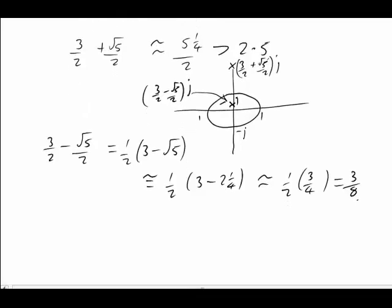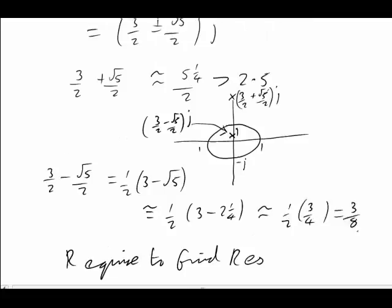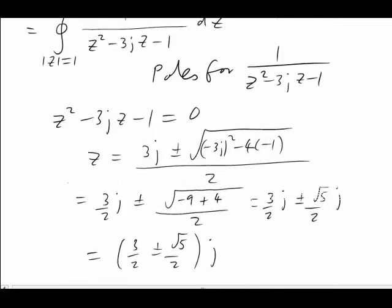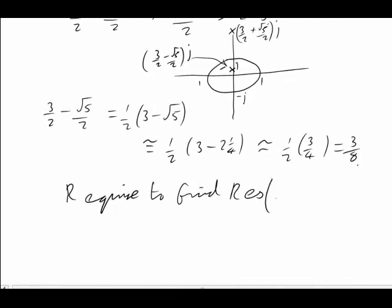So for part 4 of the presentation, we are required to find the residue of our function f of z. That was 1 over z squared minus 3j, z minus 1 at the position 3 minus root 5 over 2, j. We'll do that in part 4.